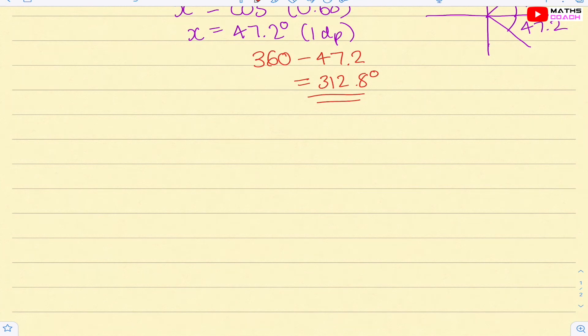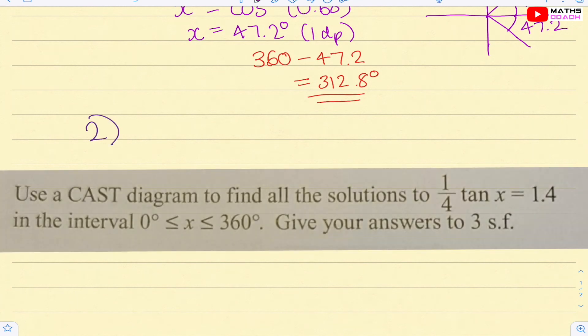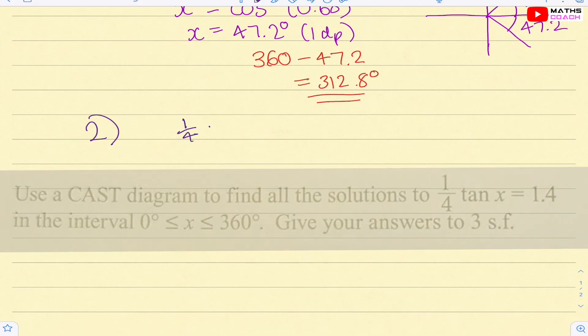Right, let's do another example. Use a CAST diagram to find all the solutions of quarter tan x equals to 1.4 in the interval 0 to 360. Give your answer to three significant figures.